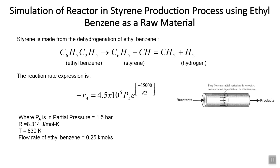Hello friends, welcome to this new video on simulation of reactor in the styrene production process using ethyl benzene as a raw material. Styrene is made from the dehydrogenation of ethyl benzene. The reaction takes place as: ethyl benzene undergoes dehydrogenation to give styrene and hydrogen.